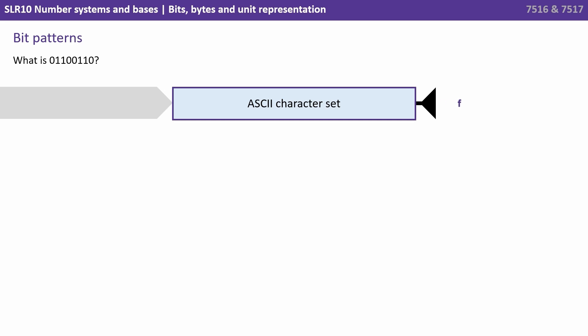We just saw a sequence of eight binary digits — 0 1 1 0 0 1 1 0 — being fed through the ASCII character set. When interpreted in that way, they represent the lowercase character F.